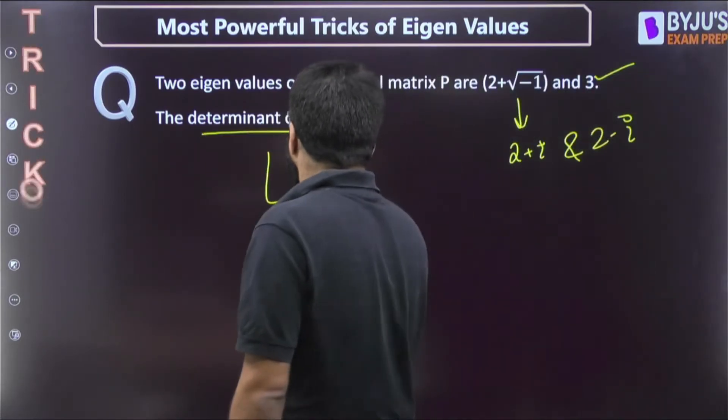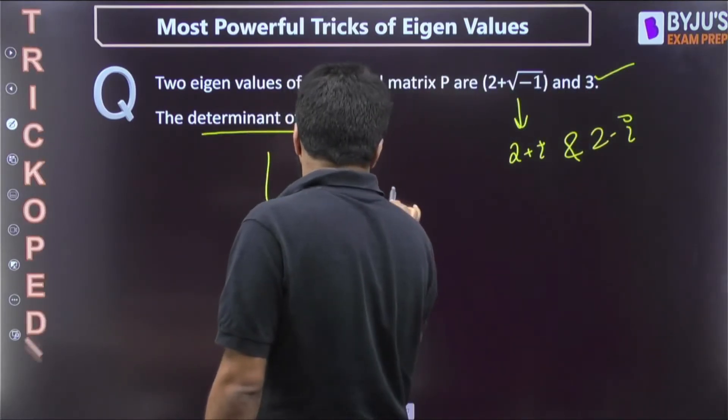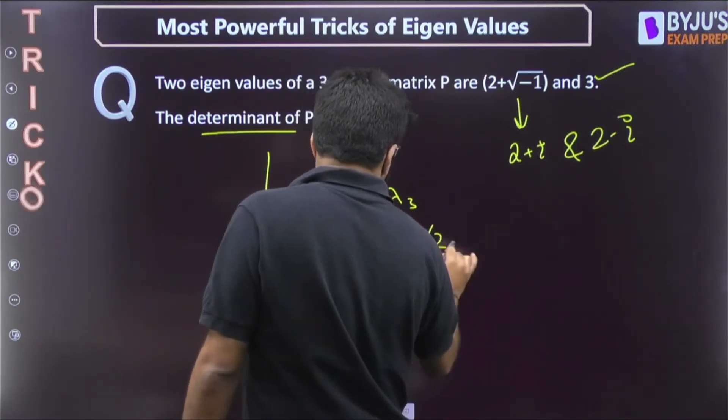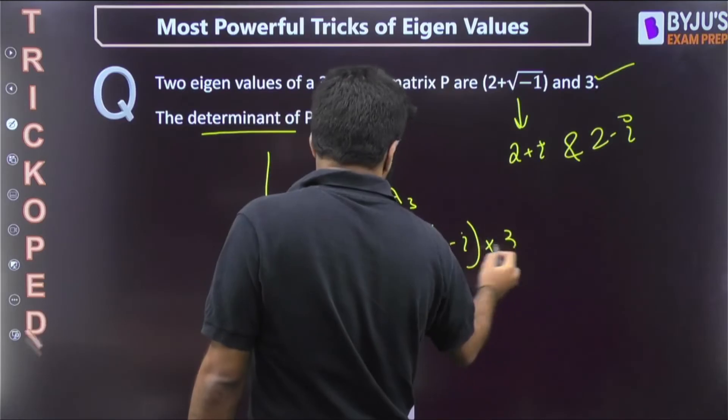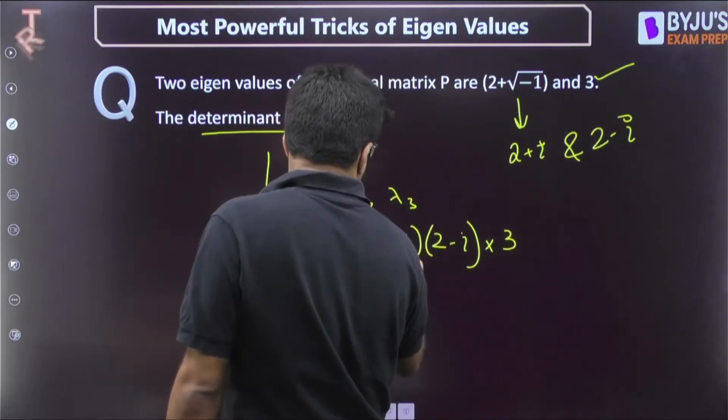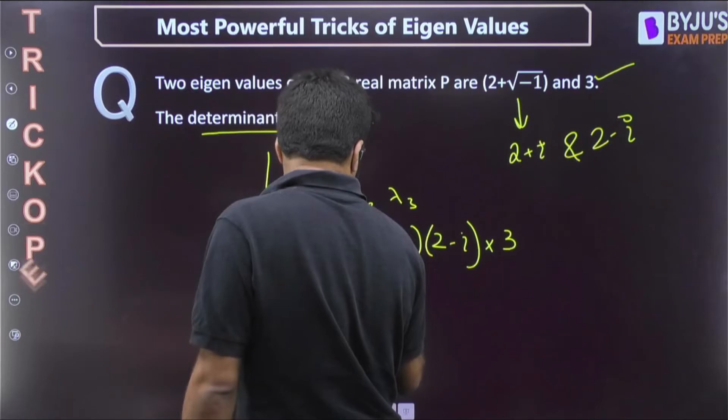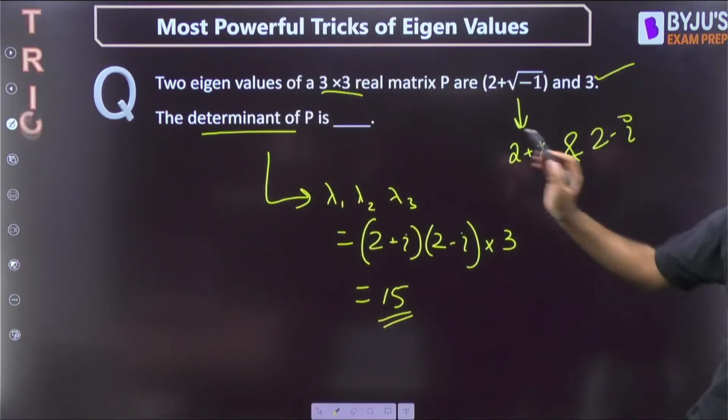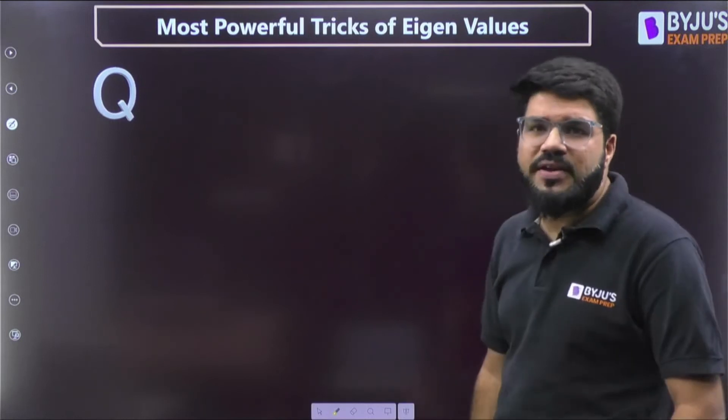Now what is the determinant of the matrix? It is the product of all the eigenvalues. So it is the product of 2 plus i, 2 minus i, into 3. This is going to be 2 square plus 1, minus i square, that will be 5 times 3 is 15. Very simple question because we are aware about these properties or tricks.